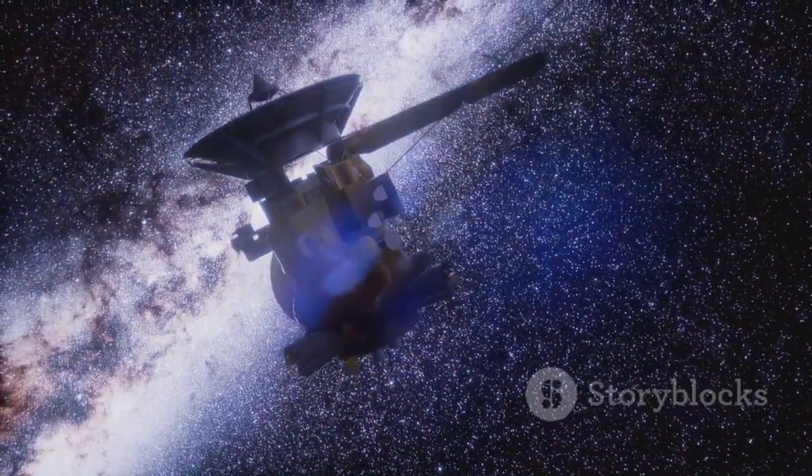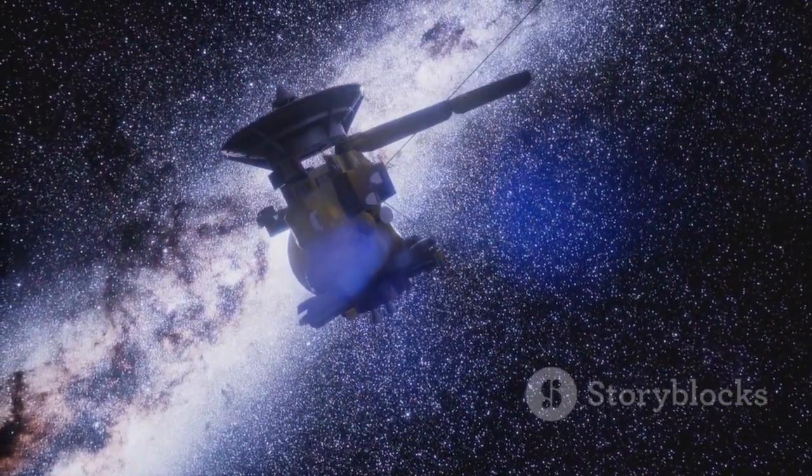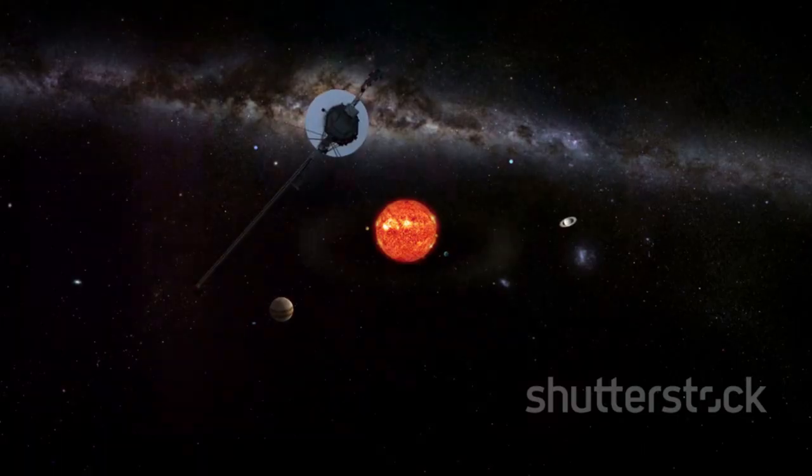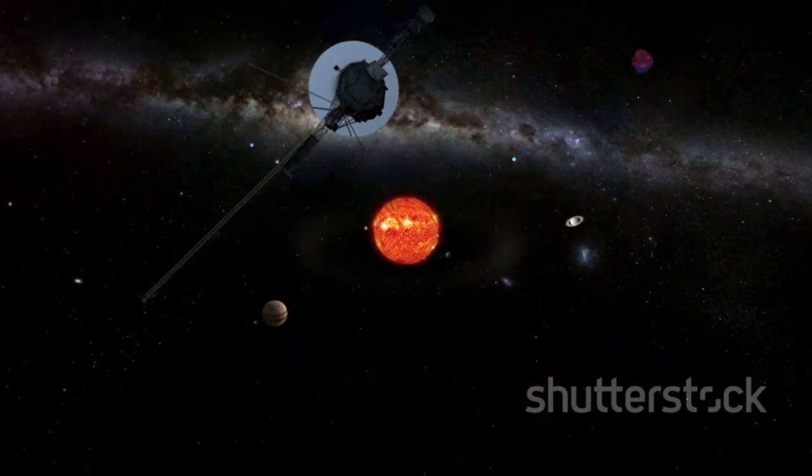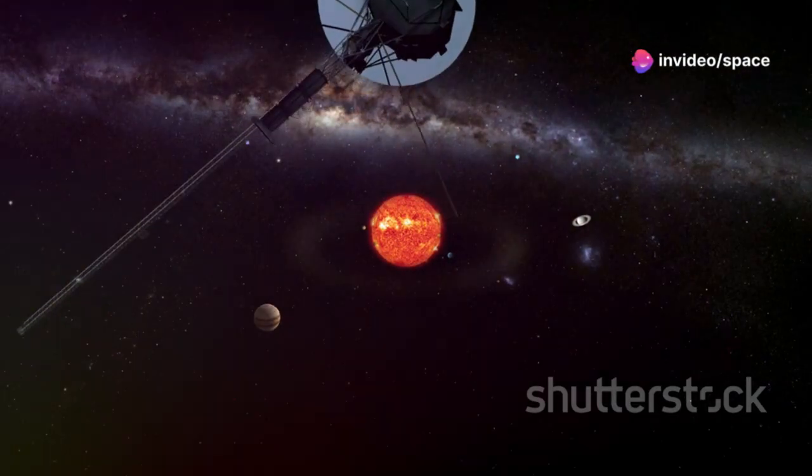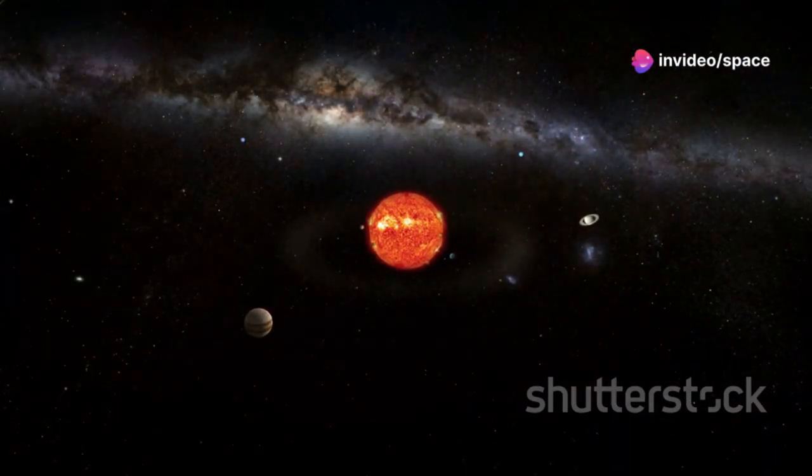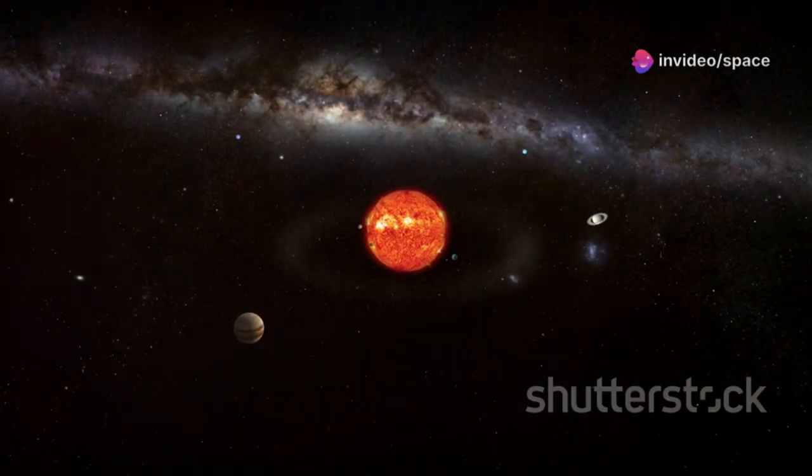The heliosphere, a vast invisible magnetic bubble carved out by the solar wind, became their next great frontier. This bubble, created by charged particles streaming from the sun, shields our solar system from the harshness of interstellar space.